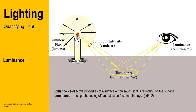The reflective properties of a surface is defined as the exitance — how much light is bounced off and reflected into the eye. The measure of light perception is defined as luminance, which is the amount of light entering the eye.